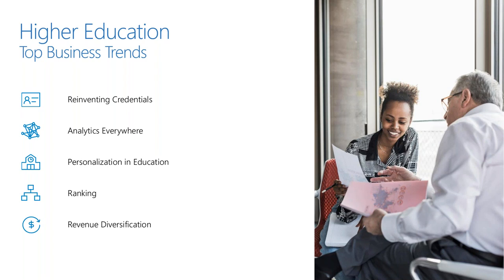Did educators 20 years ago think they could be sued over false placement data? Likely not. Ranking lists are increasingly important as the education ecosystem expands and global competition for talent — both student and faculty — gets fiercer. Revenue diversification through digital technology allows institutions to offer online and hybrid programs, extending geographic reach to attract new learners from new markets who may have time, travel, or career restraints.